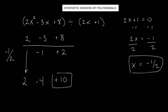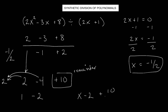Now remember, this positive 10 is the remainder. Here's something to note: if you see a common factor in these numbers — do not do this for the remainder, leave the remainder alone — but for all the numbers to the left of the remainder, if you see a common factor, you can take it out. So we're taking out a 2, which leaves 1 here and negative 2 here. So now we get our answer: x minus 2 plus 10 over 2x plus 1.